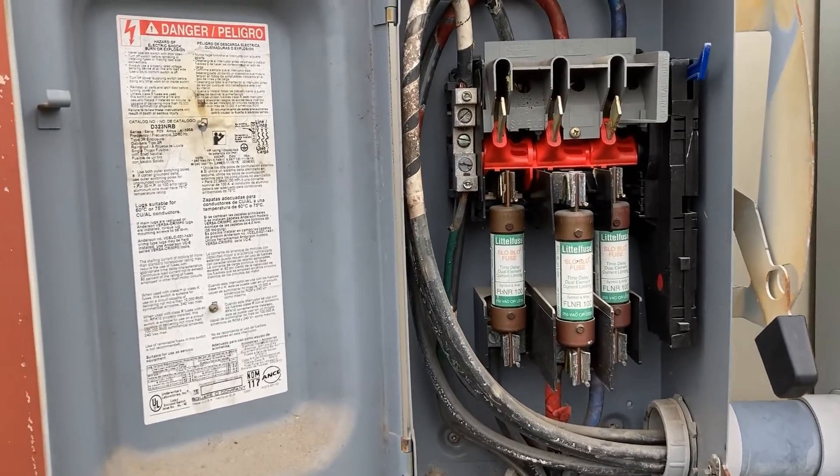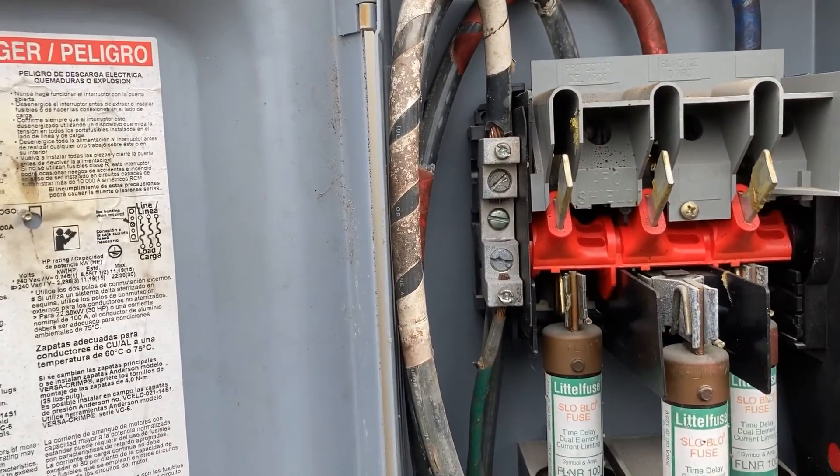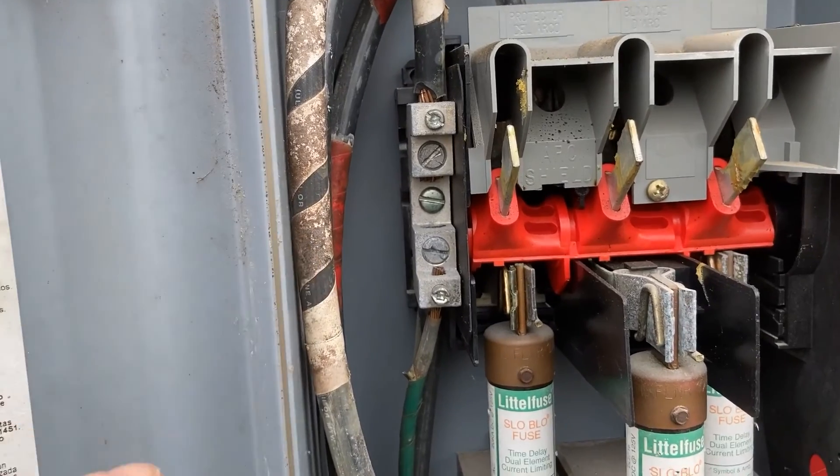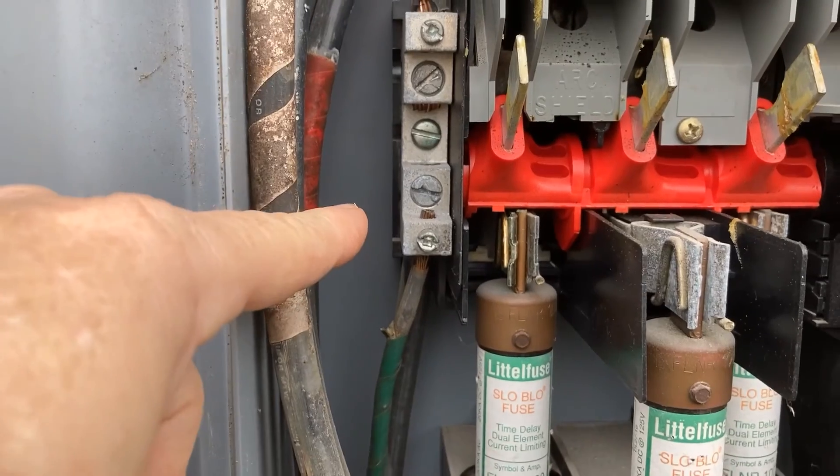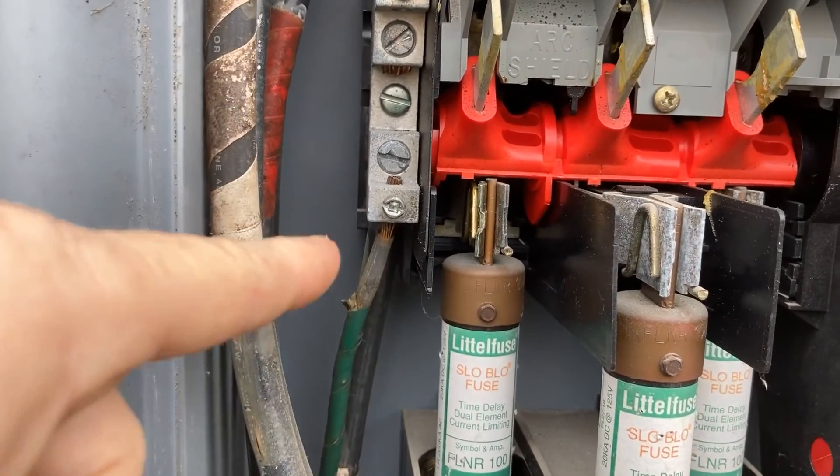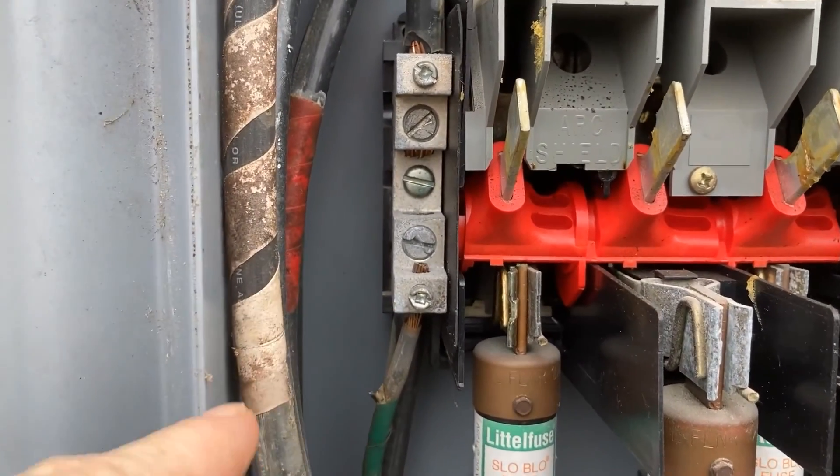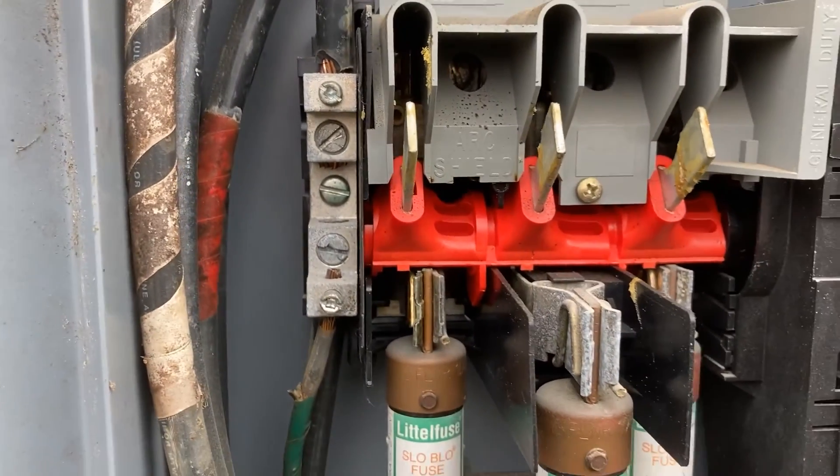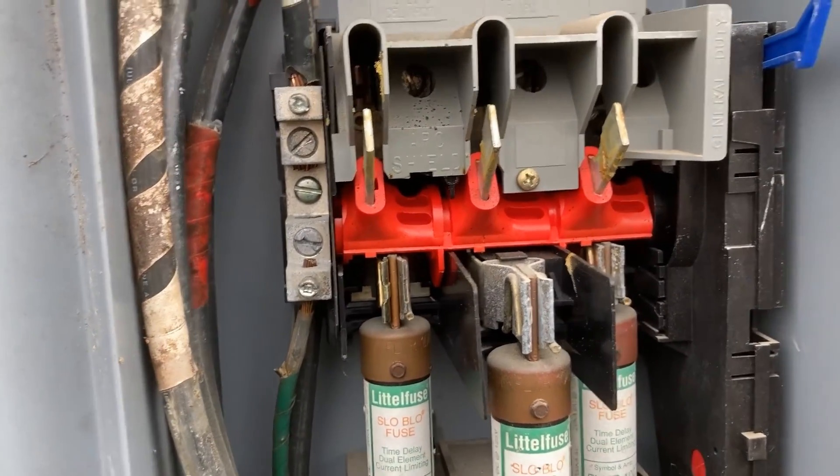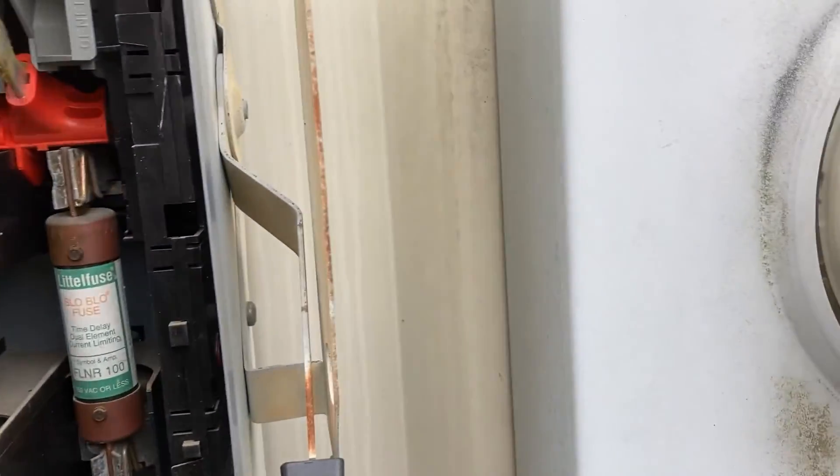And over here on the left we have our neutral bus coming in, and I want you to notice that our ground wire coming up is tied in right here to our neutral. So this is going to be our ground neutral bond happening right here at the disconnect panel. So let's shut this up and turn it back on. There we go, and take a look inside now at the actual panel.